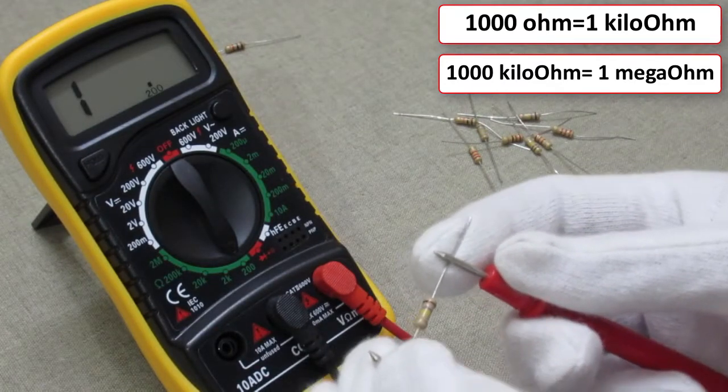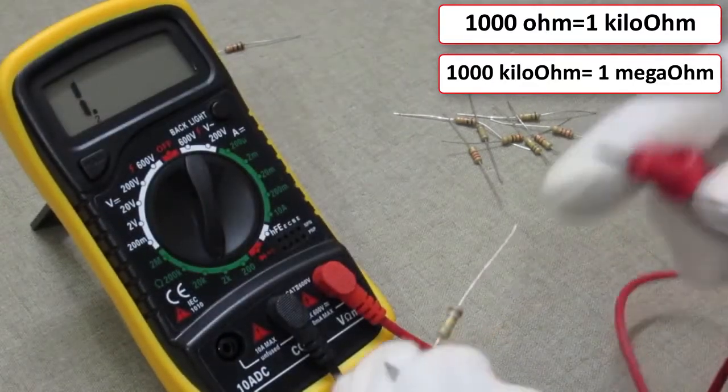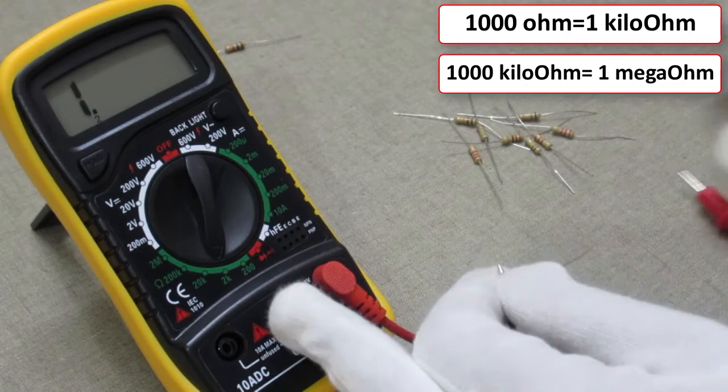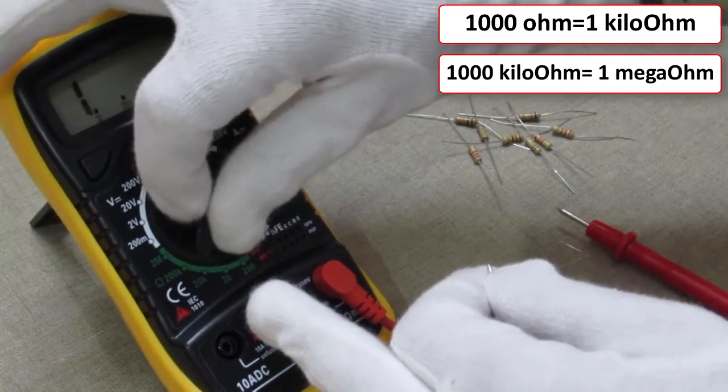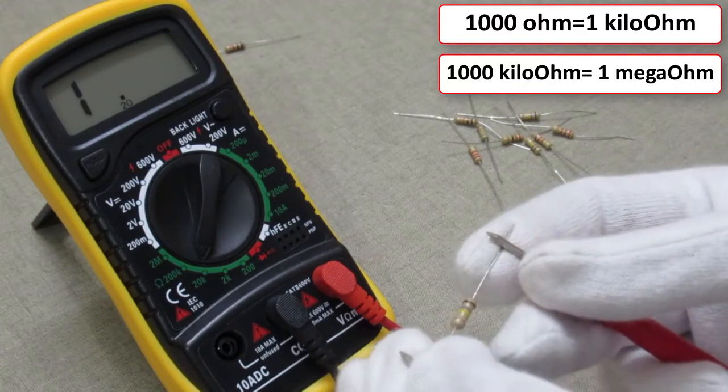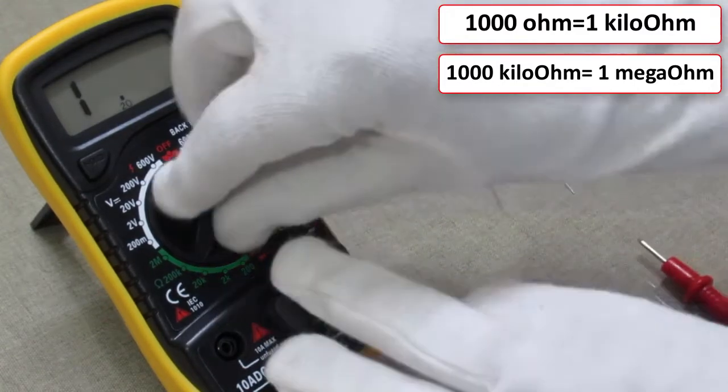The multimeter doesn't show any reading. Increase the range and touch the probes once again. Still no reading. Increase the resistance range and check again. Nothing is showing, so increase the range again.